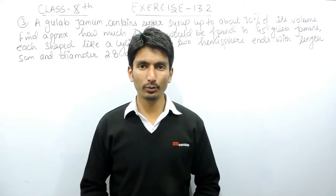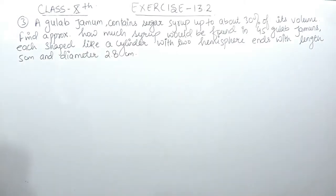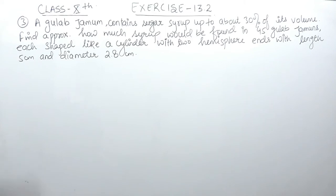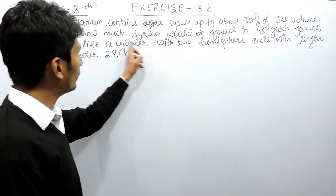Hello everyone, we are from True Maths and in this video we are going to solve question number 3 of exercise 13.2. The question says: a gulab jamun contains sugar syrup up to about 30% of its volume. Find approximately how much syrup would be found in 45 gulab jamuns, each shaped like a cylinder with two hemisphere ends, with length 5 centimeters and diameter 2.8 centimeters.